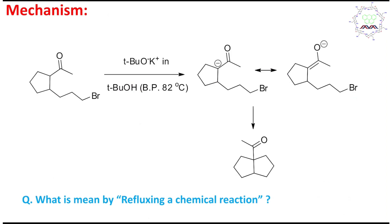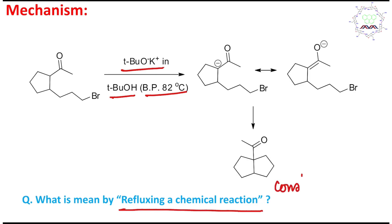Let's look at the mechanism of this reaction. The reagent is potassium tertiary butoxide in tertiary butanol. The boiling point of tertiary butanol is 82°C. The question is: what do you mean by refluxing a reaction? Refluxing means constant boiling of the reaction mixture, which is possible when the reaction temperature is above the boiling point of the solvent.